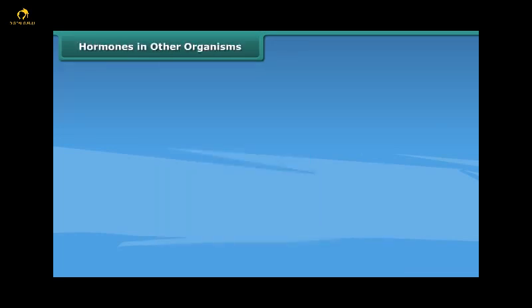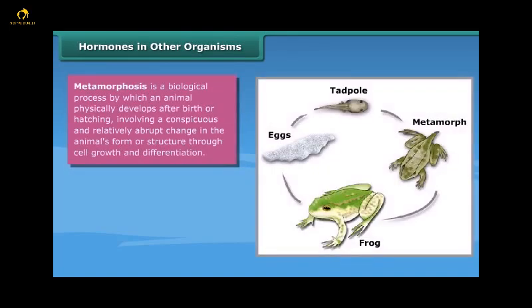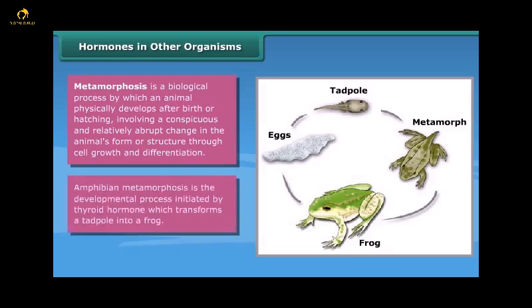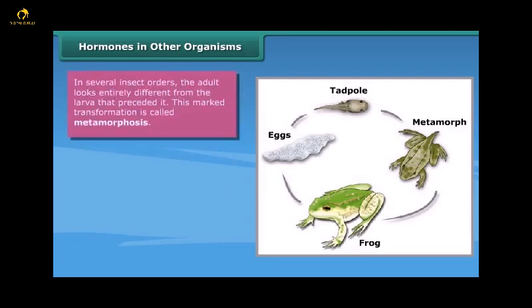Hormones in other organisms: metamorphosis is a biological process by which an animal physically develops after birth or hatching, involving a conspicuous and relatively abrupt change in the animal's form or structure through cell growth and differentiation. Amphibian metamorphosis is the developmental process initiated by thyroid hormone, which transforms a tadpole into a frog. In several insect orders, the adult looks entirely different from the larva that preceded it — this marked transformation is called metamorphosis.